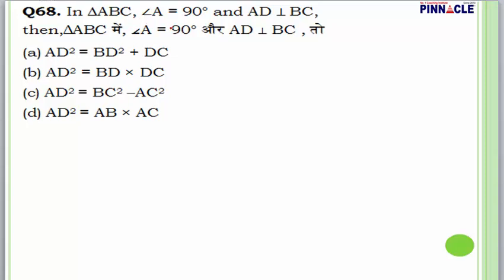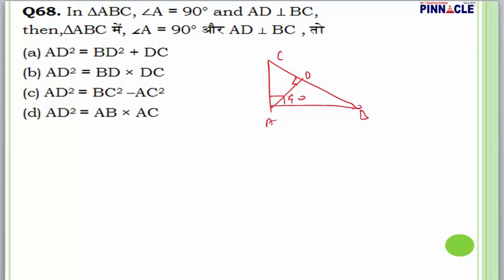Question 68: In triangle ABC, angle A = 90° and AD is perpendicular to BC. We need to find which relation is correct. Using a 3-4-5 right triangle example: area = ½×3×4 = 6. Also area = ½×5×AD, so AD = 12/5. CD = 9/5, BD = 16/5. Verifying: AD² = (12/5)² = 144/25 = (9/5)×(16/5) = BD×DC. The property is AD² = BD·DC. Answer is B.